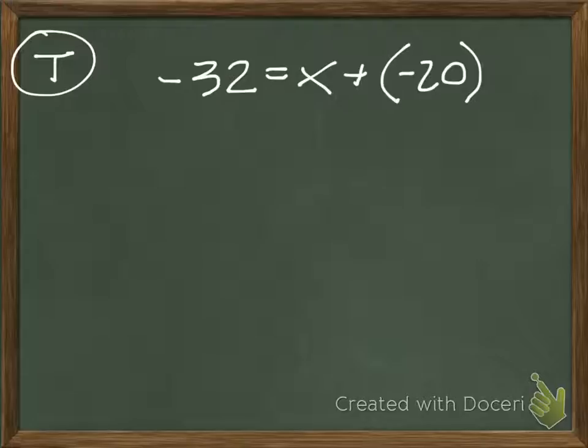Or in math language, the sentence. What makes the sentence true? So we need to find that number. So negative 32 equals something plus negative 20. We need to find what that missing number is.